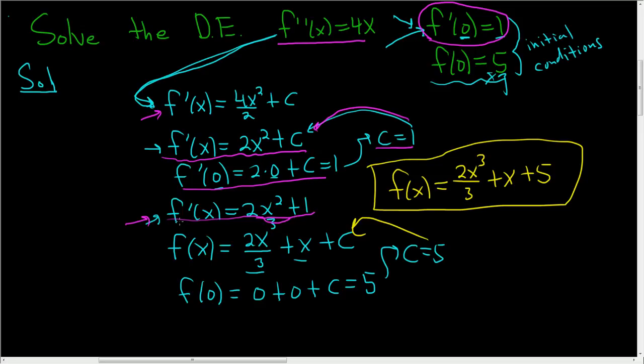Then you integrate again, so you get the function, so 2x cubed over 3 plus x plus c. Then you use the other condition to find c, and then you take the c and you plug it back in and there it is.